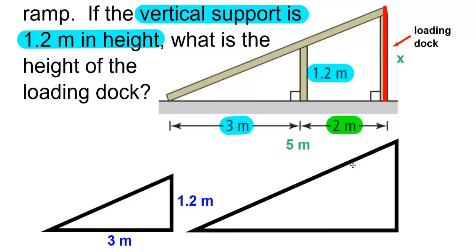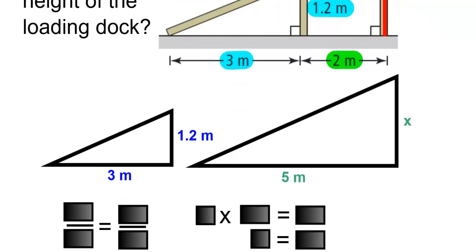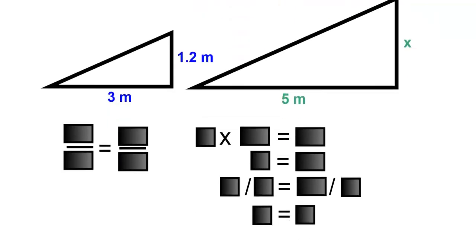We'll now redraw the triangle and put the dimensions in. Since these are similar triangles, we'll use proportions to solve for X.